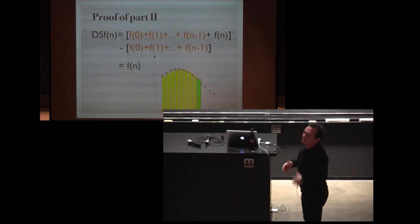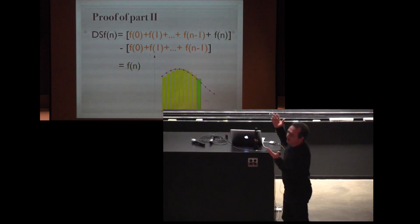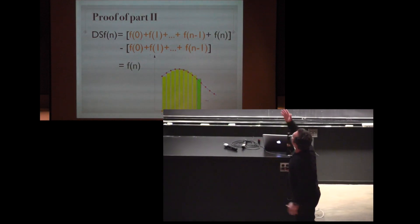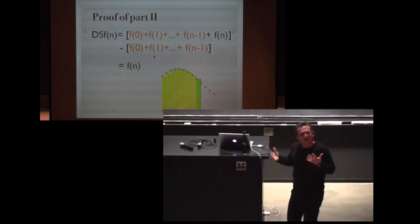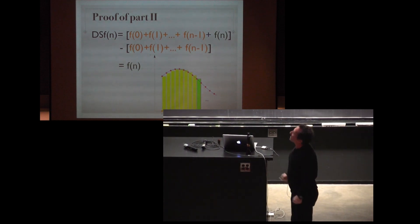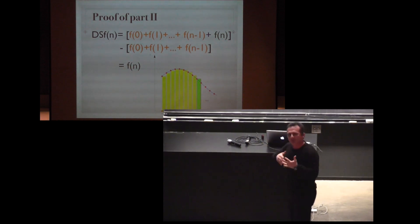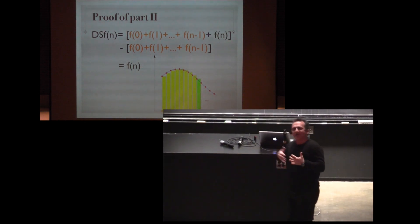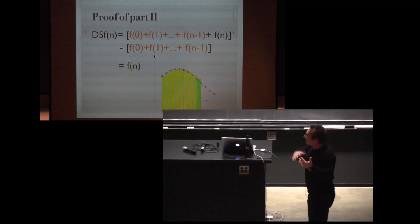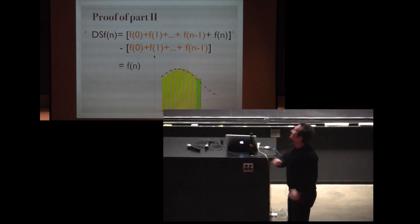The second proof is even easier. We have two terms. We take the difference of the sums and only one term survives and we get the function back. This is a very important principle. The fundamental theorem of calculus links something easy with something hard and because we have a link between these two things the hard becomes easy.